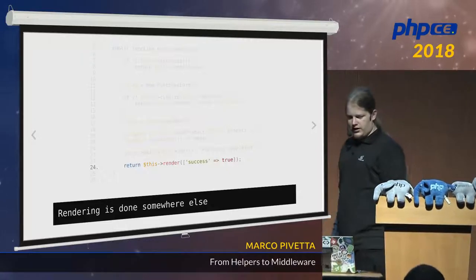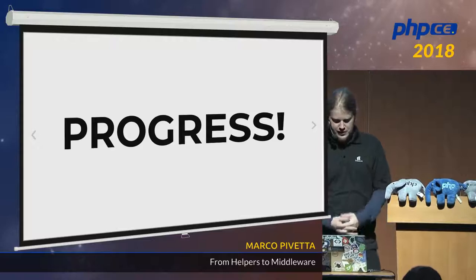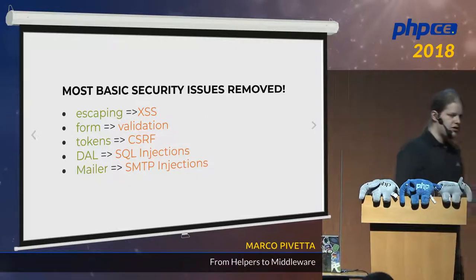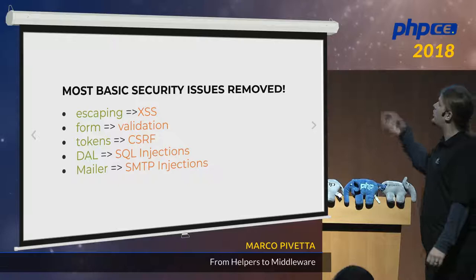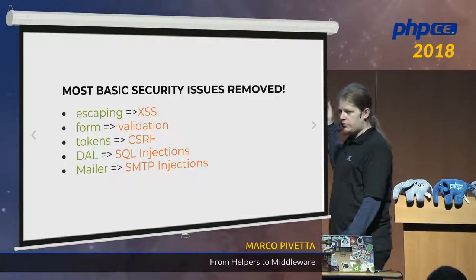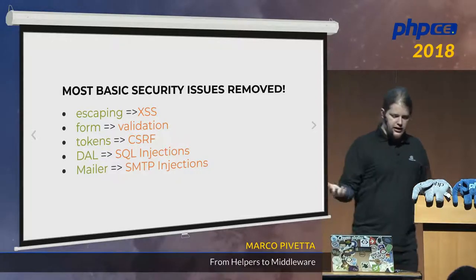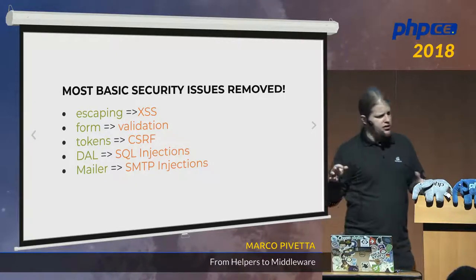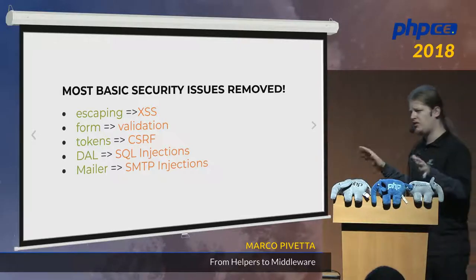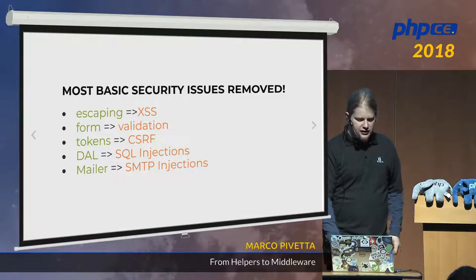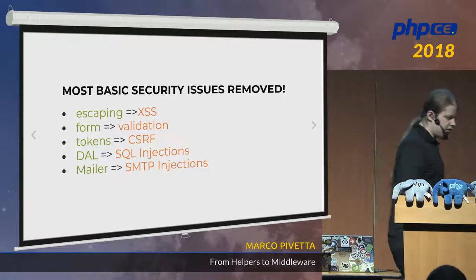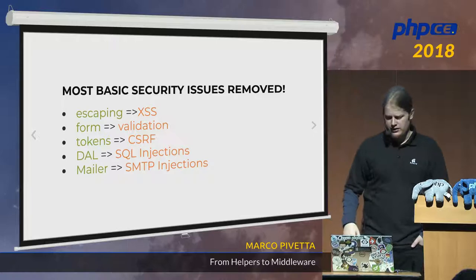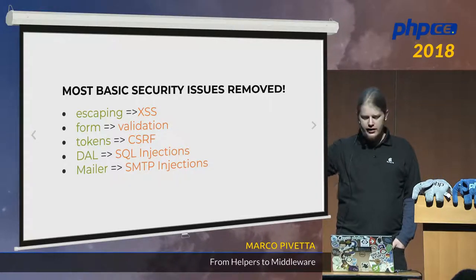What's mostly important is that we started having some security problems solved by our tooling. We started fixing XSS by having escaping provided by our frameworks. Form validation tokens for CSRF and other things. APIs came around 2013–2014 — that's when people started discussing them. Data access layers for avoiding SQL injection. We also started using a real mailer abstraction so we don't have typical header injection in emails — because if you allow any string to go into your headers, well, good luck with that.